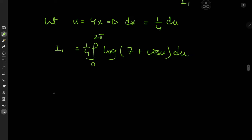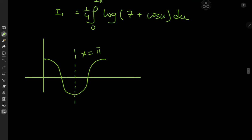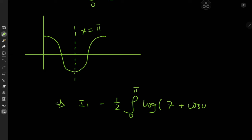Let's make use of some symmetry of the cosine curve. Between 0 and 2π, the cosine curve has a nice symmetry about the line x = π, so instead of integrating from 0 to 2π we can integrate from 0 to π and double the result. This implies I₁ = (1/2) times the integral from 0 to π of log(7 plus cosu) du.